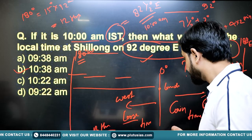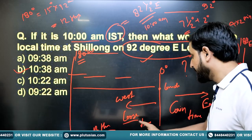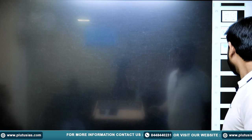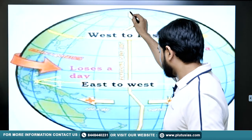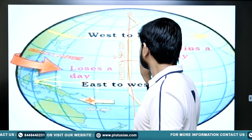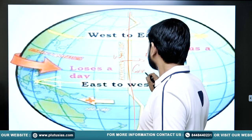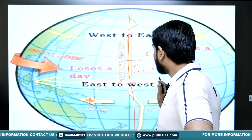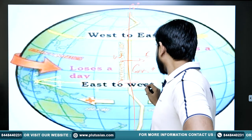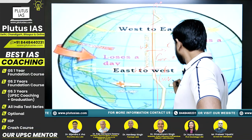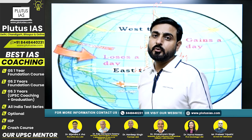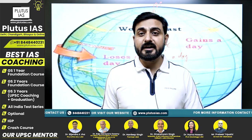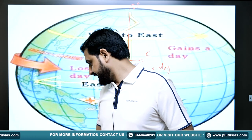At 180 degrees east or west, the time difference from Greenwich is 12 hours — 180 degrees divided by 15 equals 12. So 180 degrees west is 12 hours behind and 180 degrees east is 12 hours ahead. Adding both gives 24 hours difference. This is why the 180 degree meridian is the International Date Line. When a traveler crosses the IDL from west to east, they gain a day; crossing from east to west, they lose a day. That concludes today's discussion — the daytime saving concept and further applications will be covered in the next class. Thank you very much, bye bye, take care.